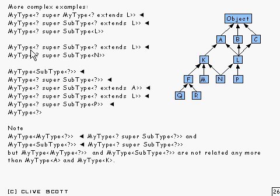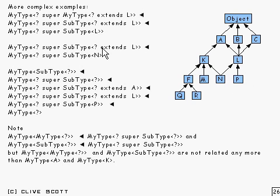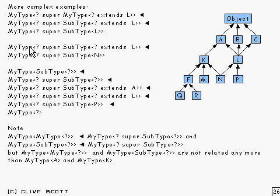Now we've got something like MyType of something, which is a supertype of SubType of something which extends L. We could ask: what about N? N is another example of something you could pull out from here. We've got a subtype of something that extends L, so it would be that — that would be the applicable set. N is in that set, so it is a subtype of it. And therefore, because we've got super in front, it becomes a supertype instead. It's fairly straightforward — you just have to apply the rules mechanically, and you get everywhere.